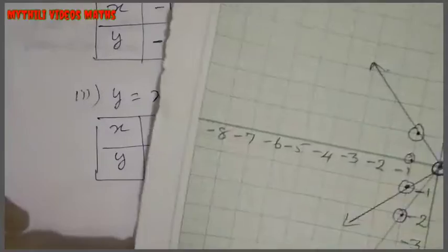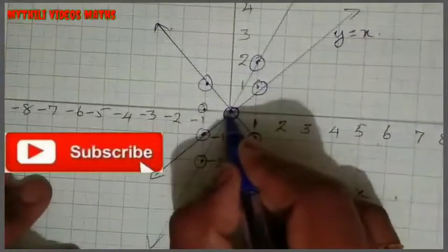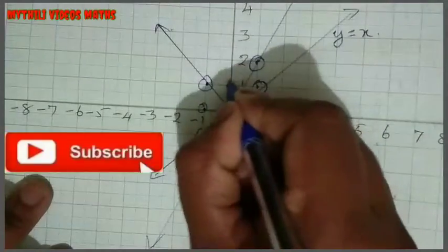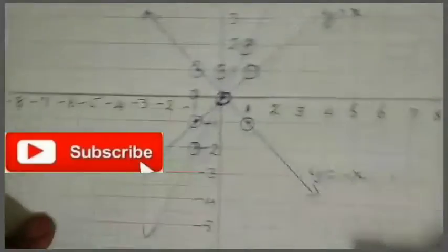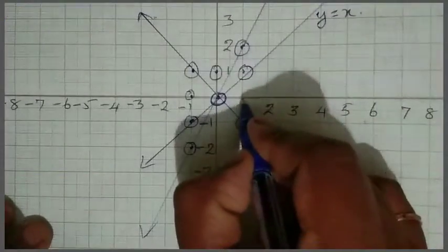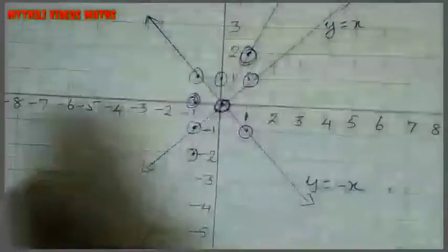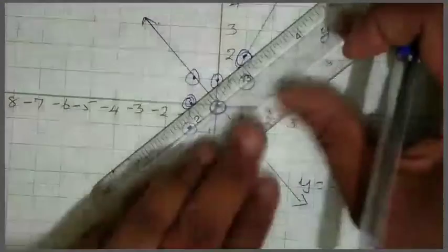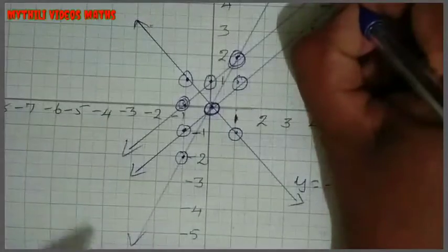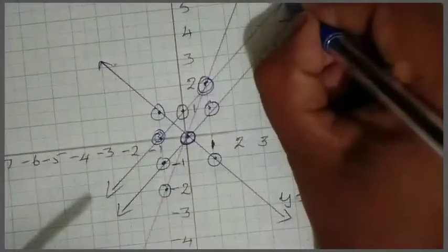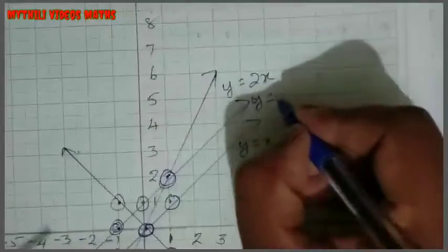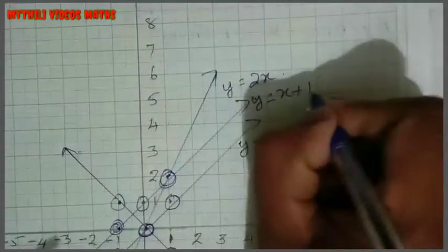Next is (0, 1): x-axis is 0, y-axis is 1. Next point (1, 2): x-axis is 1, y-axis is 2. So now mark the points and draw the line. So now we draw the line — this is y = x + 1. That is the third equation. Now the fourth equation: y = ½x + 1.